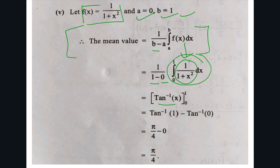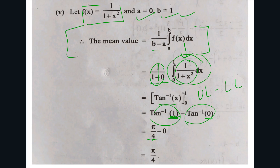The integral of 1/(1+x²) dx is simply tan⁻¹(x). So b minus a becomes 1 minus 0 = 1. After integration, substitute the upper limit minus lower limit: tan⁻¹(1) minus tan⁻¹(0). tan⁻¹(1) equals π/4 and tan⁻¹(0) equals 0. So π/4 minus 0 gives π/4 as the answer.